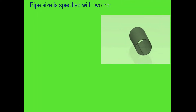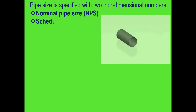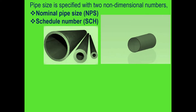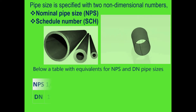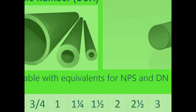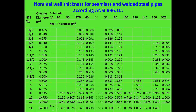Pipe size is specified with two non-dimensional numbers: one is nominal pipe size, and two is schedule number. The table shown here displays the equivalence for NPS and DN pipe sizes. Refer to the table showing nominal wall thickness for seamless and welded steel pipes according to ANSI B36.10.